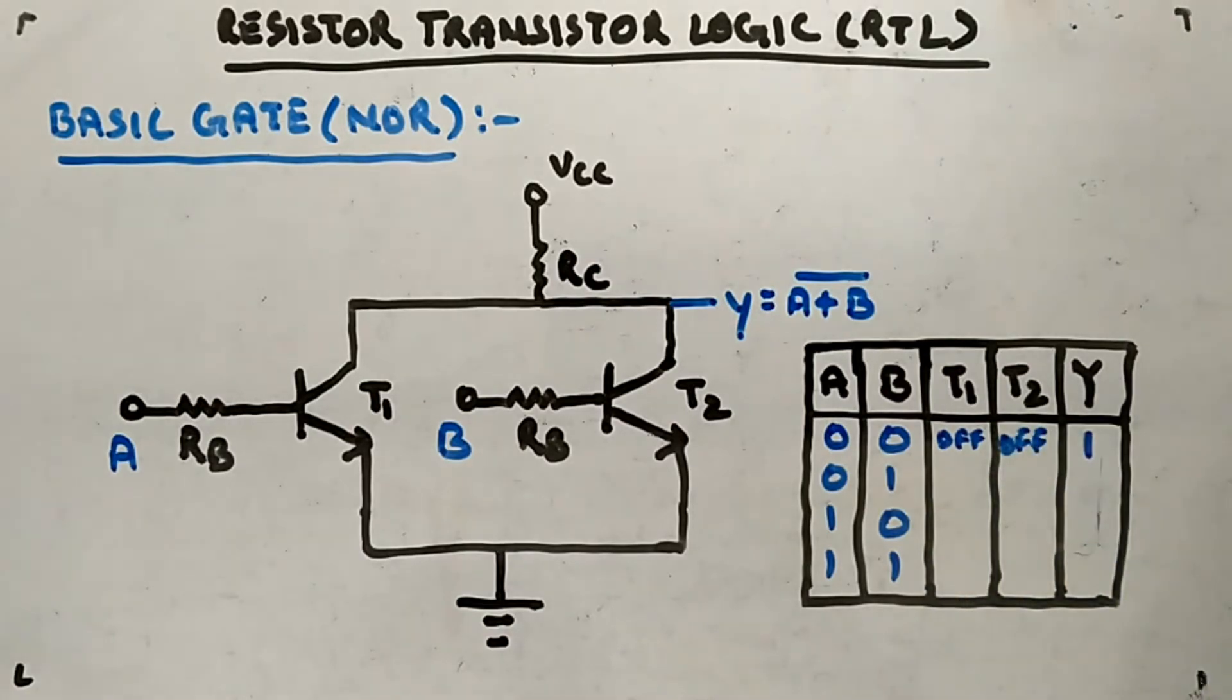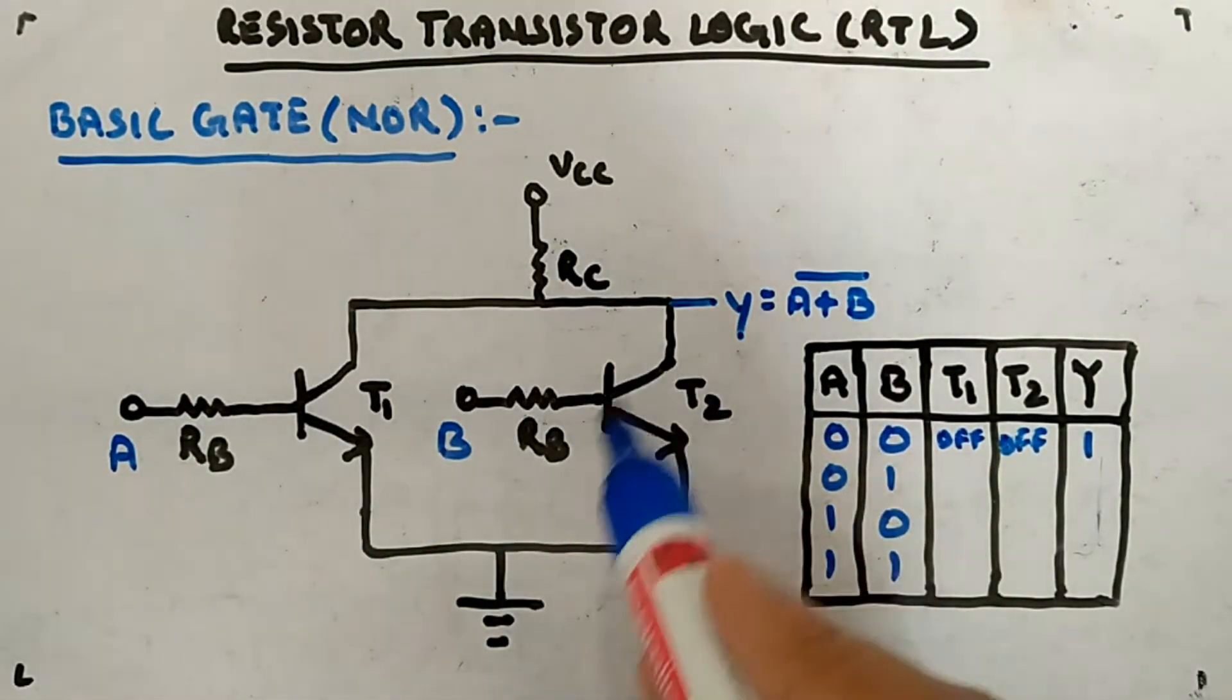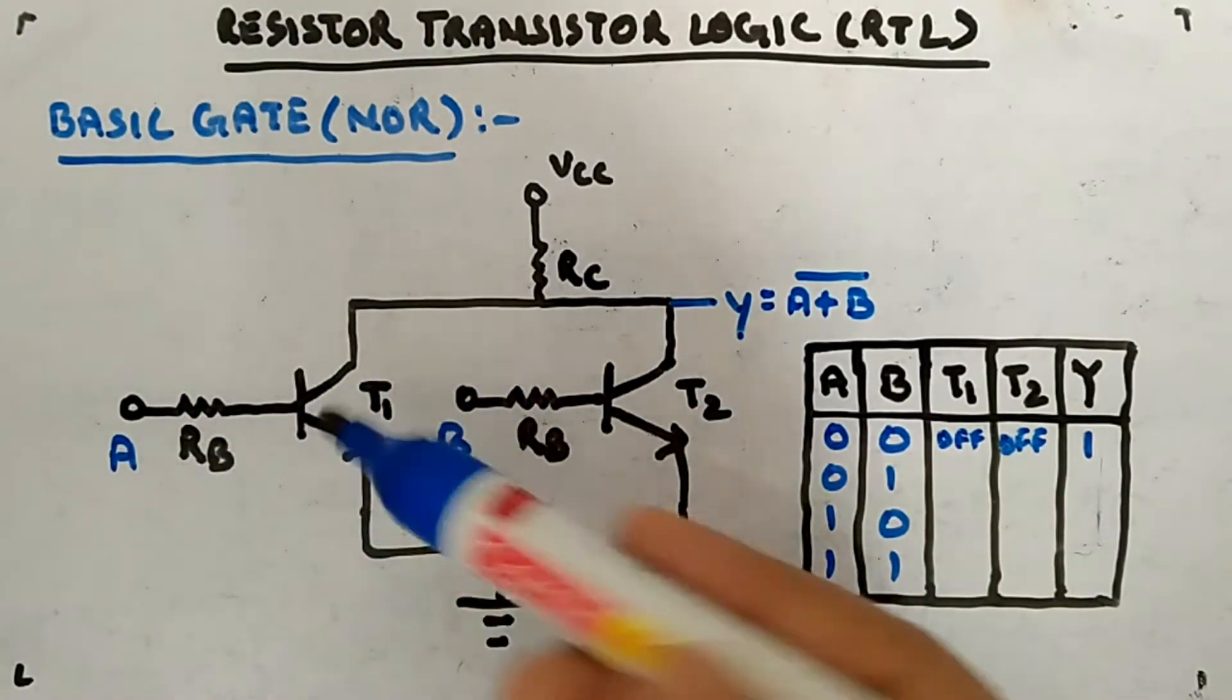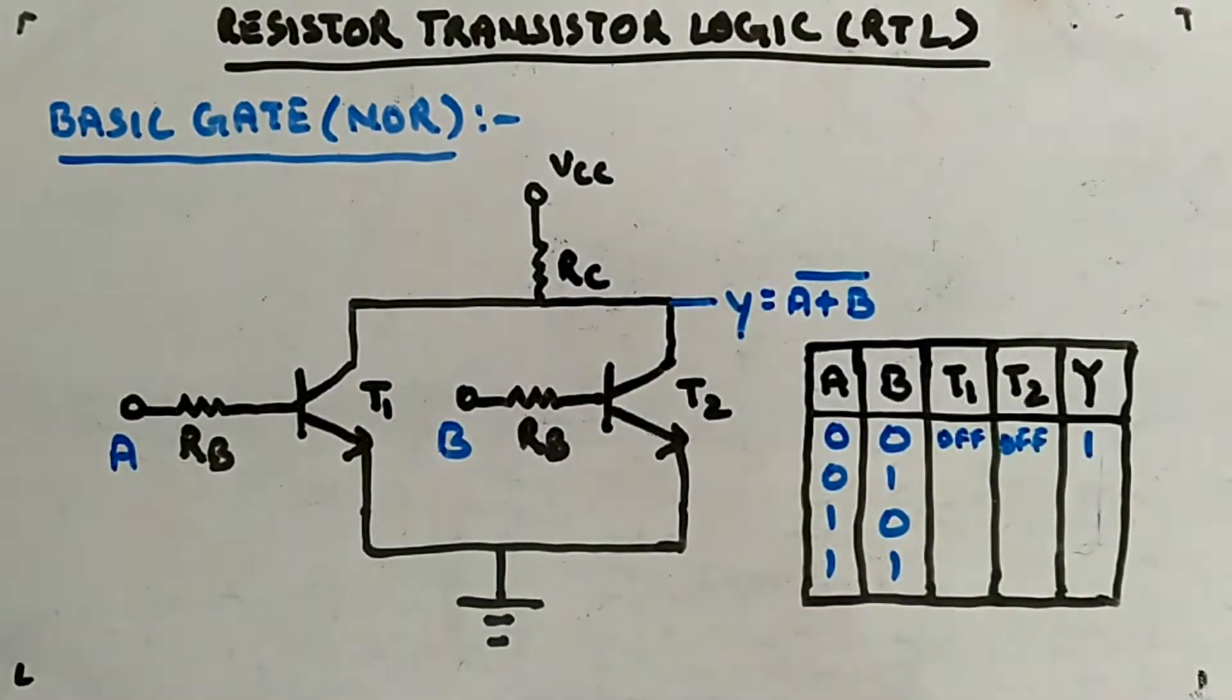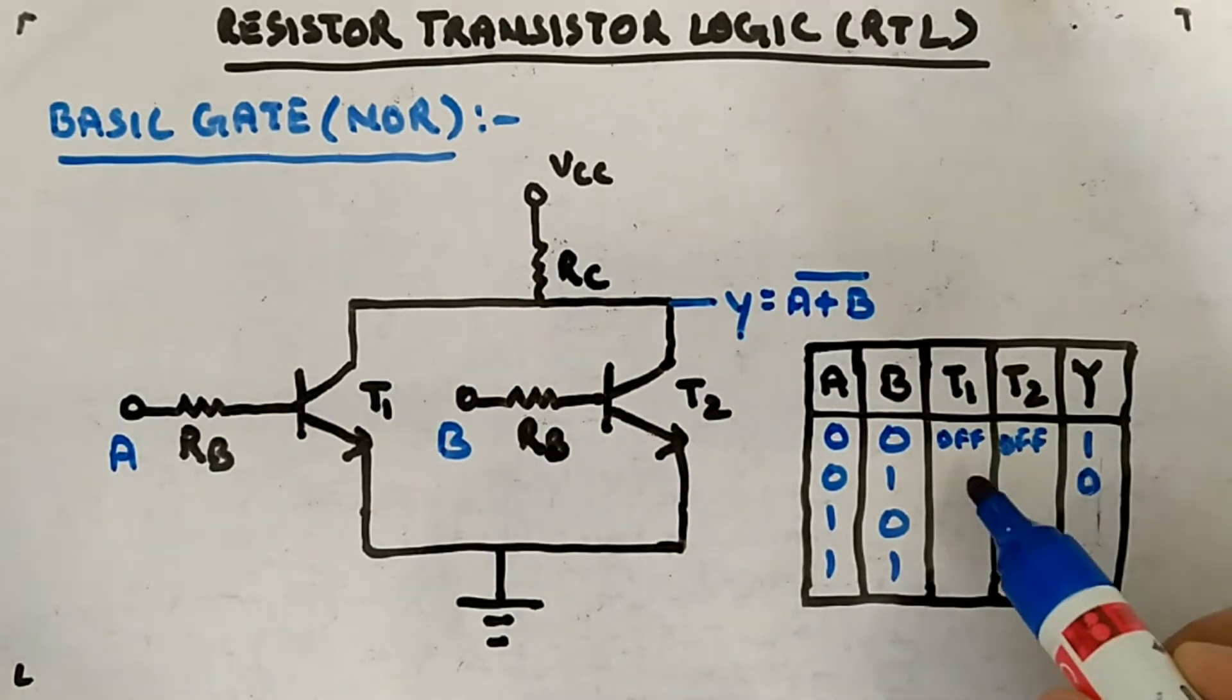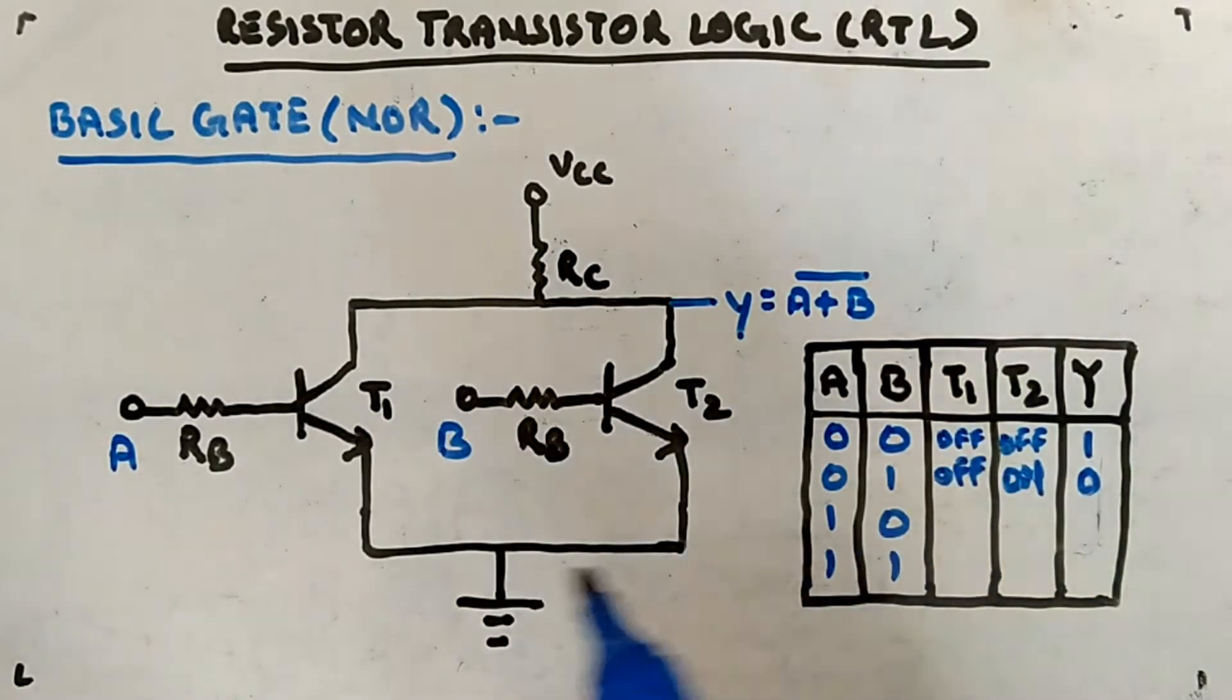Now if you apply zero-one, this guy is zero, this guy is one, meaning this will be in saturation, this will be in cutoff. There won't be any connection here, but there will be connection like this because Vc will be almost equal to zero. So the output will also be zero. In this case, T1 is off, T2 is on.